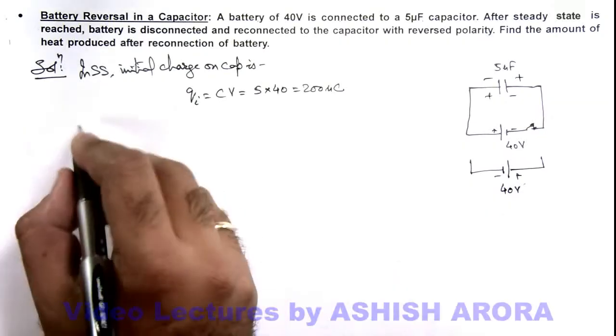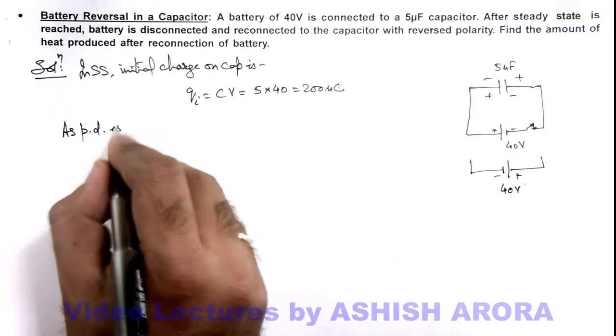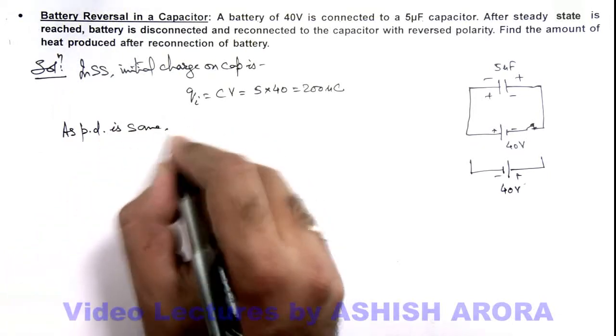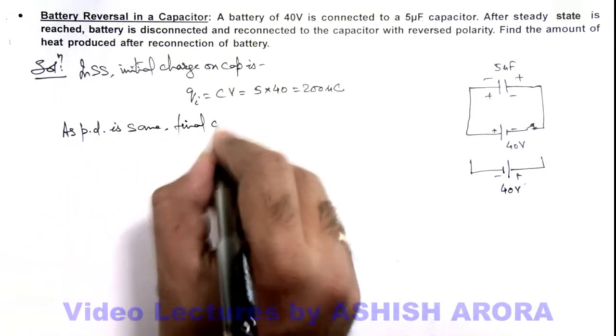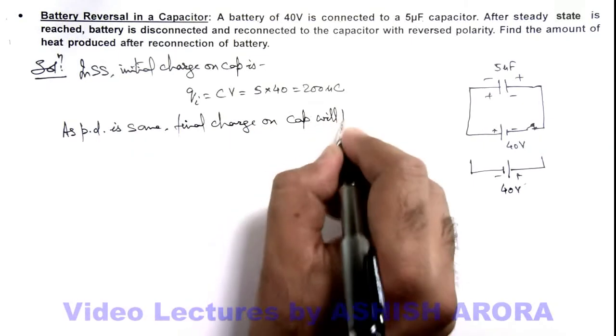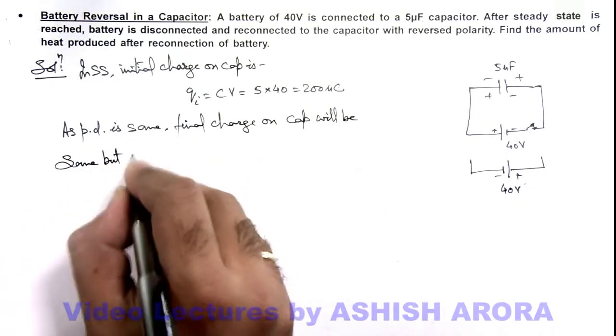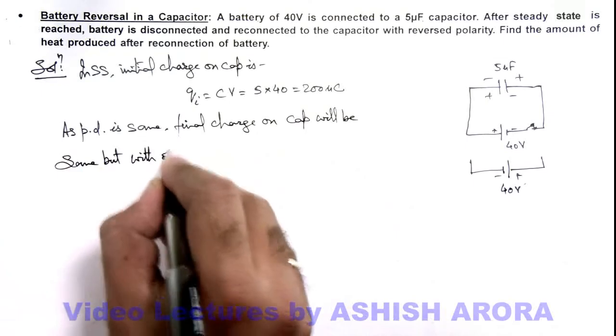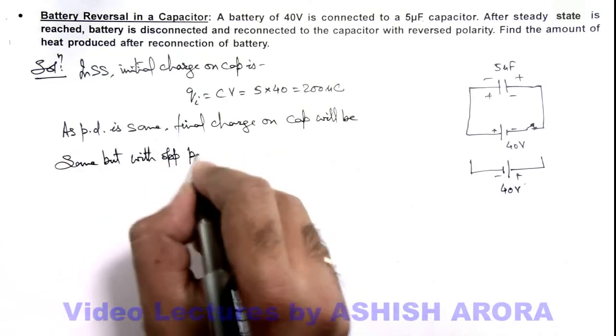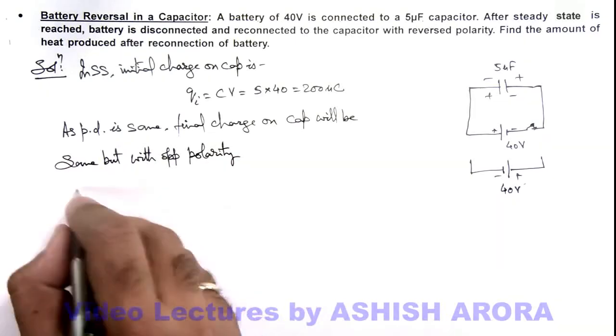So we can write, as potential difference is same, final charge on capacitor will be same but with opposite polarity.